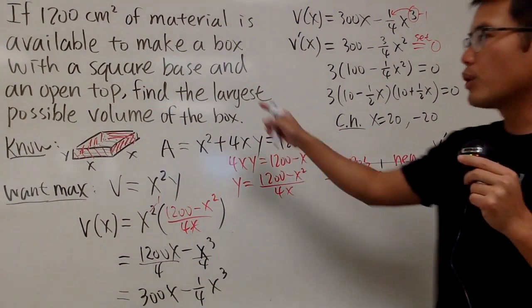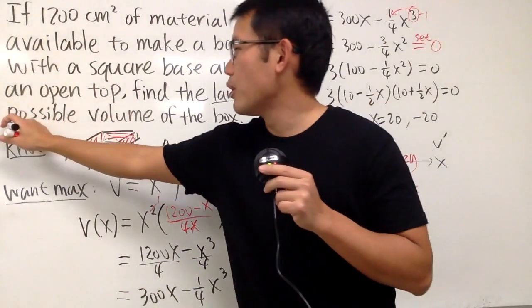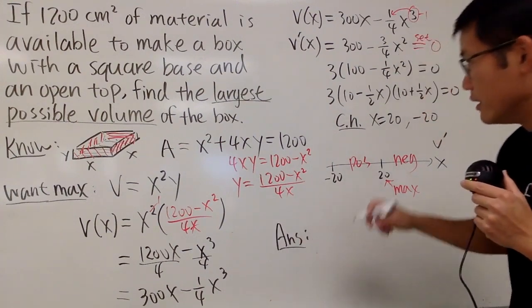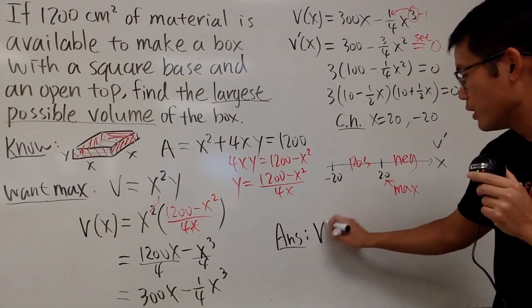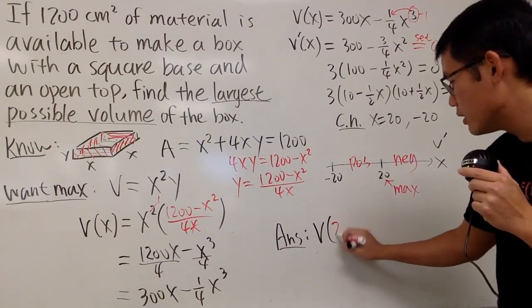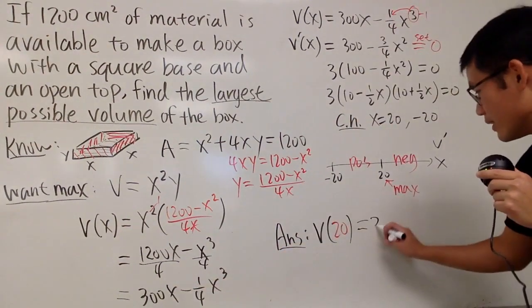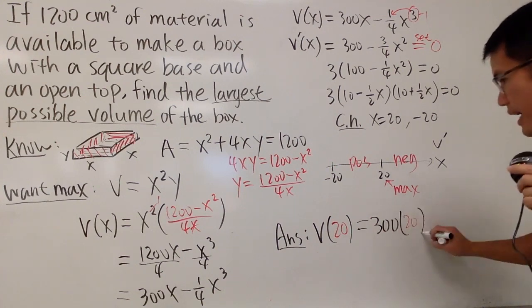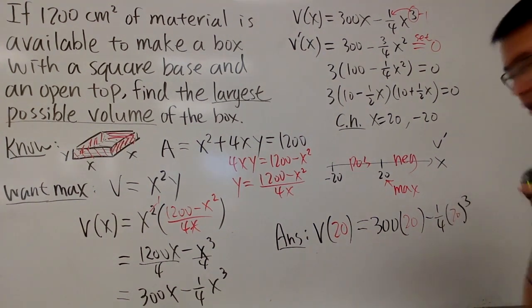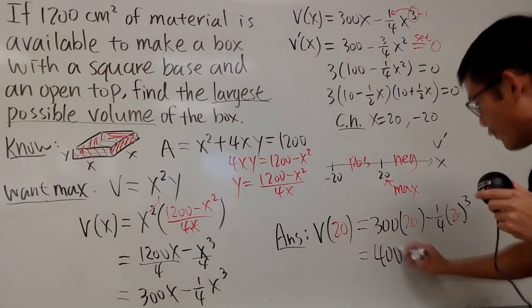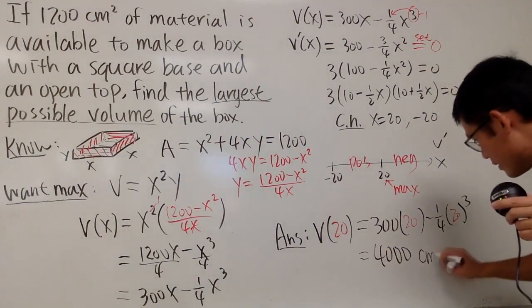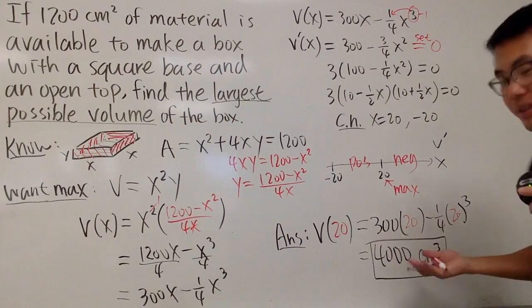Well, that's pretty much it. And the question is asking us for the largest possible volume. So we're not looking for the dimension. So I will just write this down here for you guys. Here is the answer. The largest possible volume is when you put down 20 into the volume formula right here. So I'll just put down V of 20. I'll put down 20 right here. So I will get 300 times 20, and then minus 1 over 4 times 20 cubed. So of course, here now we can just work this out. You will get 4,000. And of course, we should also include the unit and its volume. So we will have centimeters cubed, like this. So this right here will be the answer.